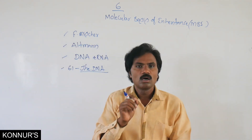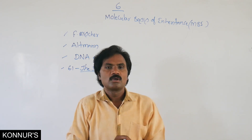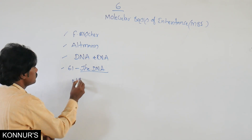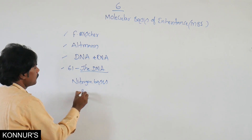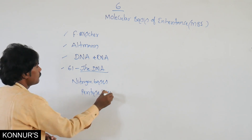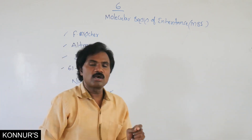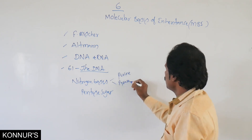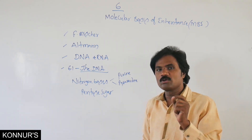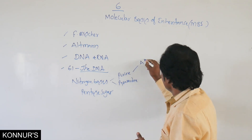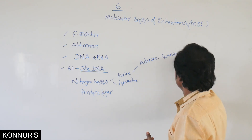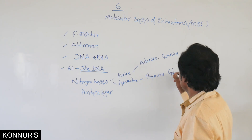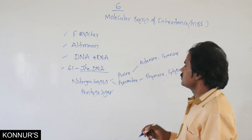What nitrogen bases are present in DNA? The nitrogen bases are purines as well as pyrimidines. The purines are adenine and guanine. The pyrimidines are thymine, cytosine, and uracil.